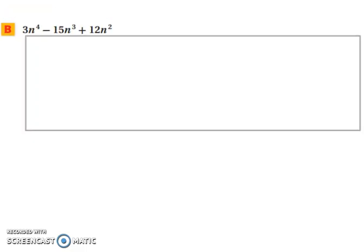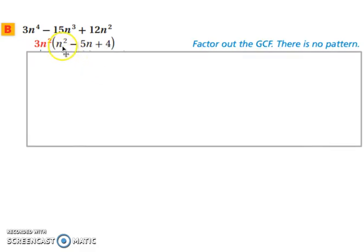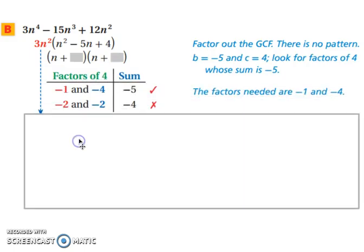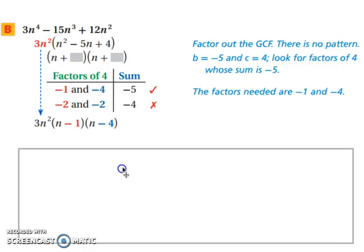Let's try 3n to the 4th minus 15n to the 3rd plus 12n squared. We can factor out the greatest common factor of 3n squared. After factoring that out, we look for a pattern — no perfect square trinomial or difference of two squares. So we factor n squared minus 5n plus 4 using the x squared plus bx plus c method. We need two numbers that multiply to 4 and add to negative 5: that's negative 1 and negative 4. So the completely factored form follows.